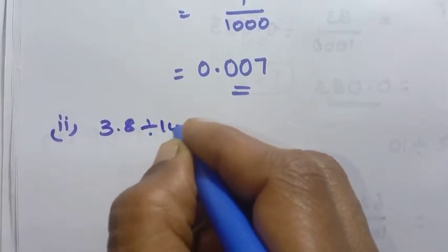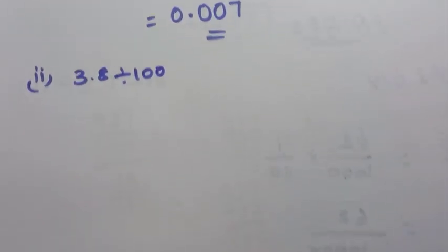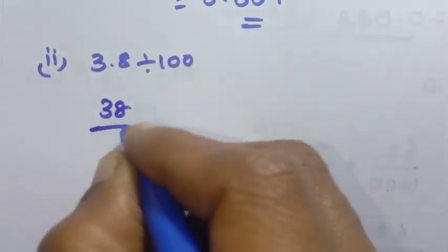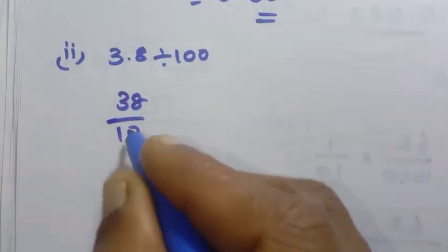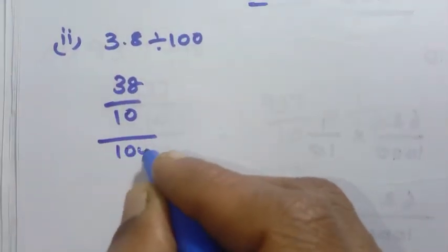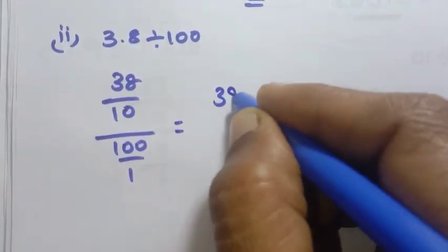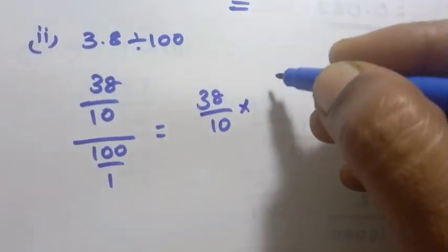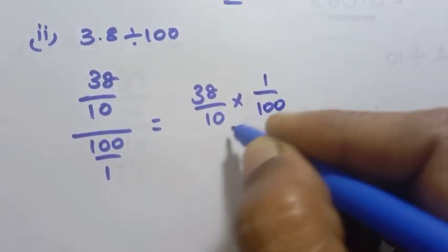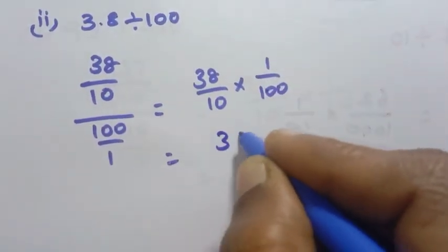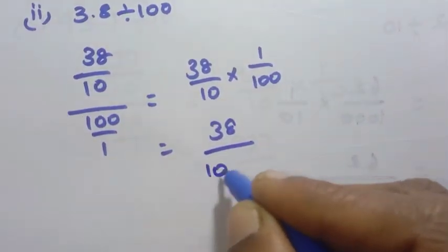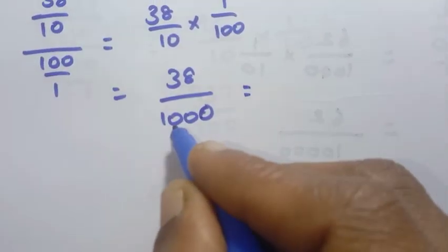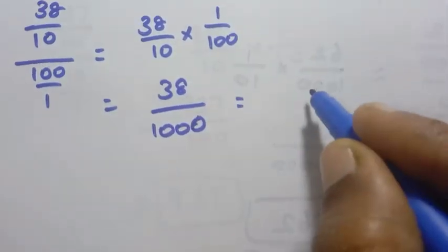Second problem: 3.8 divided by 100. We can see 3.8 has 1 decimal place, so it is 38 by 10. Divided by 100 by 1, so 38 by 10 into 1 by 100 gives 38 by 1000. That is 3 decimal places, 2 numbers: answer is 0.038.